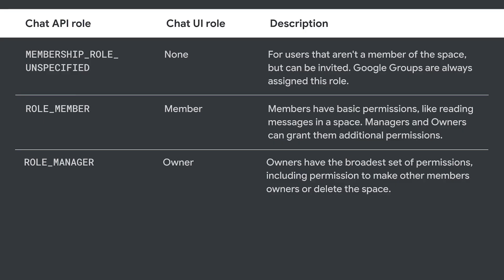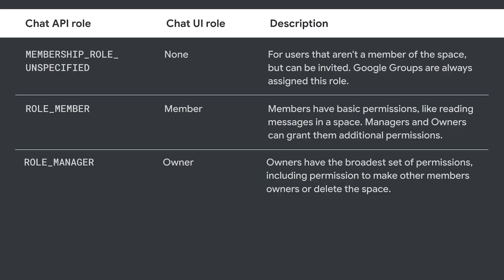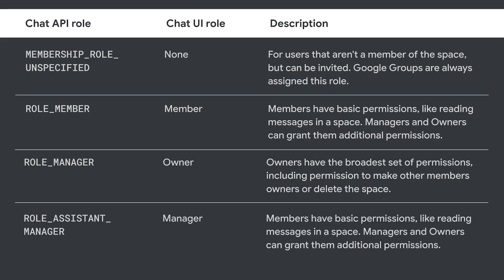Now in the Chat UI, Role Manager users are called owners. This is a cosmetic change, so permissions and the API enum remain the same. To help space owners administer spaces, we're introducing Role Assistant Manager, which is called Manager in the UI.